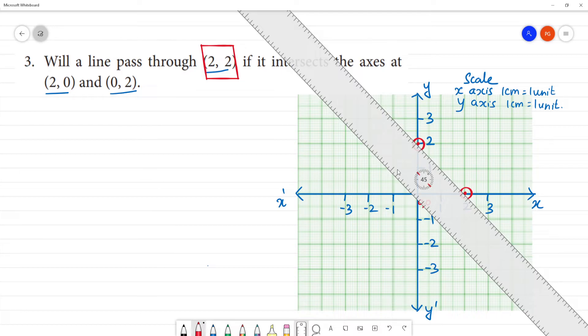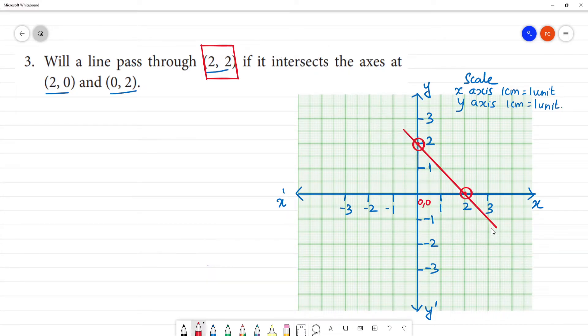Right, with these two points marked, let's see where (2,2) is. Okay, the (2,2) point is here. So, does this straight line pass through (2,2)?